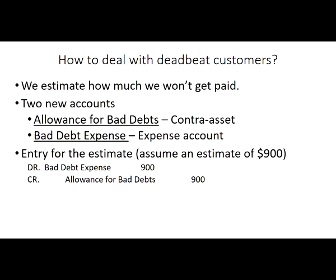A couple things to note: bad debt expense is an expense associated with the fact that we're not getting paid. The allowance for bad debts is a contra asset account, so we're increasing both accounts with this transaction — expenses going up, allowance for bad debts going up. The effect of this transaction is expenses are higher and assets are lower, which is like double bad news. We're assuming the worst — that $900 of our items won't be paid — and we're taking that hit: increasing expenses, decreasing income, and decreasing our assets right away.